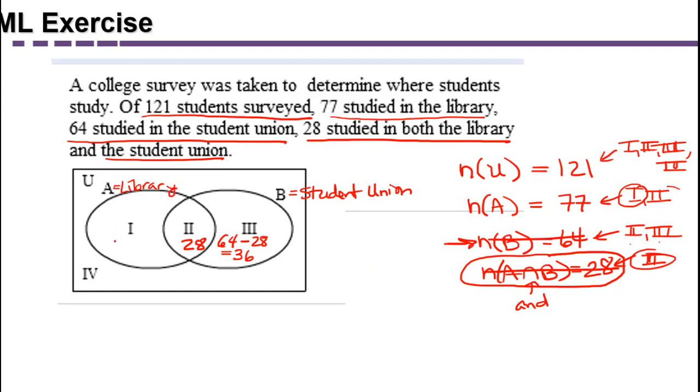We know that spread out across regions 1 and 2, there are a total of 77, but we've already accounted for the 28 that are in the overlap. So subtracting, we would have 49 students that are just in region 1.